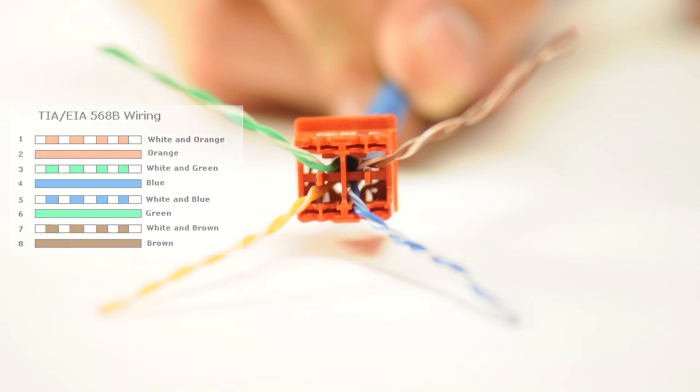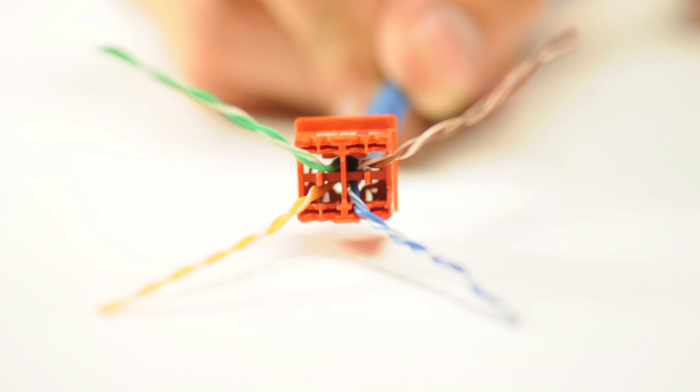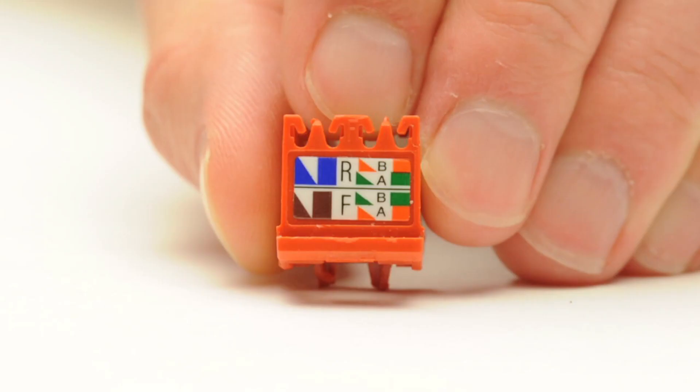Cat5e cable is comprised of four pairs. Each pair is color coded: orange, orange white, green, green white, etc. This helps identify and pin out the cable.